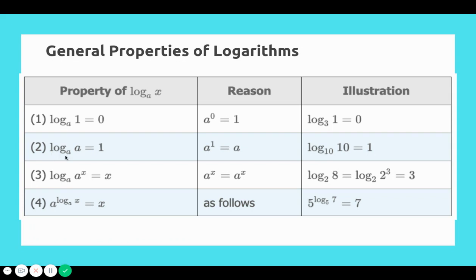Second property: log base a of a equals 1. For example, log base 10 of 10 equals 1, because anything to the first power gives you the same thing. Third property: log base a of a to the x equals x, because a to the x equals a to the x — if the bases are the same, the exponents must match. And the last property: a raised to the power of log base a of x equals x, because the exponential and log cancel each other out as inverses.